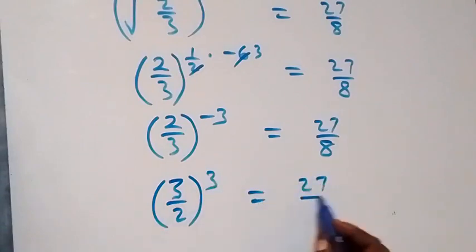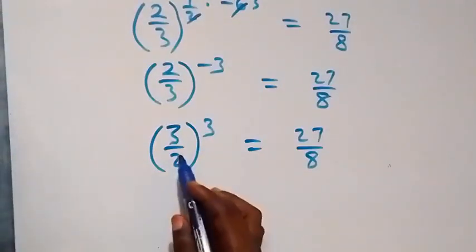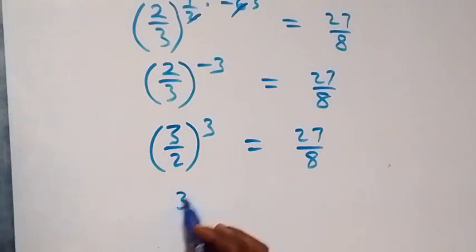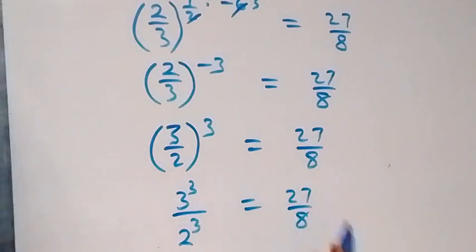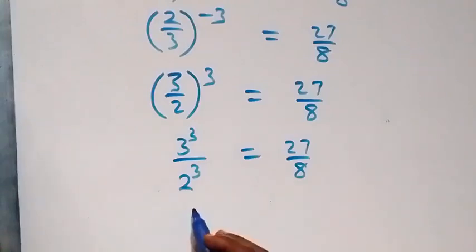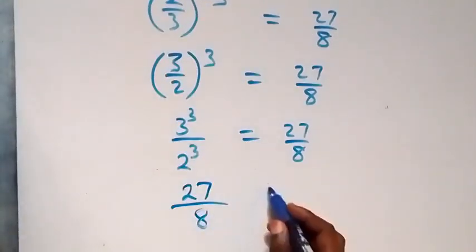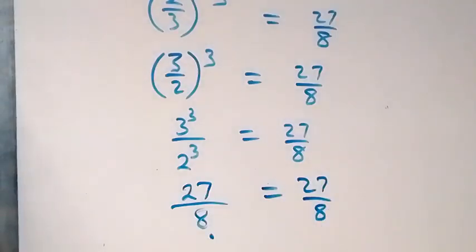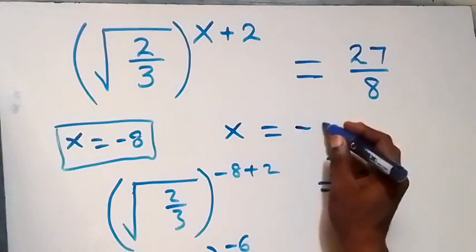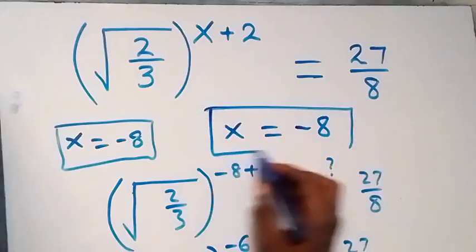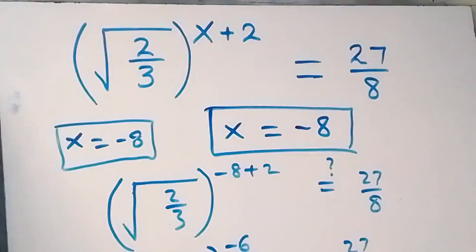We have 3 raised to power 3 over 2 raised to power 3, which is 27 over 8. Since 3 multiplied by itself 3 times is 27, and 2 multiplied by itself 3 times is 8, this equals 27 over 8. So the left-hand side equals the right-hand side, and hence x equals minus 8 satisfies the given problem. Thank you for watching — subscribe and follow for more videos, leave a comment, see you next class, bye for now.